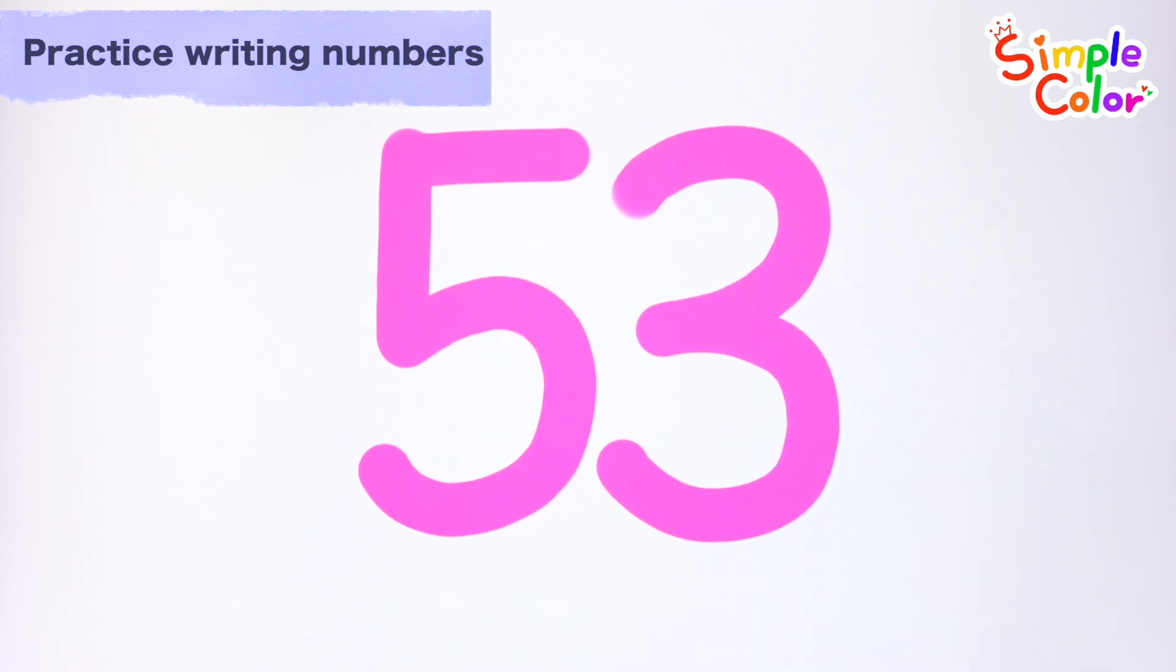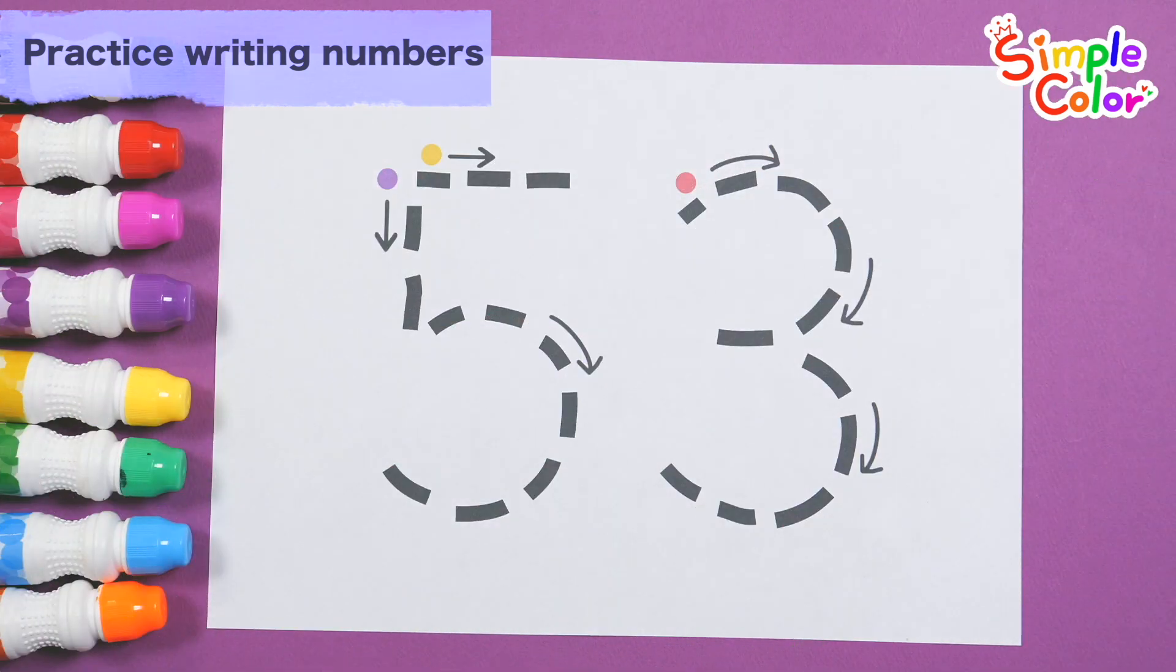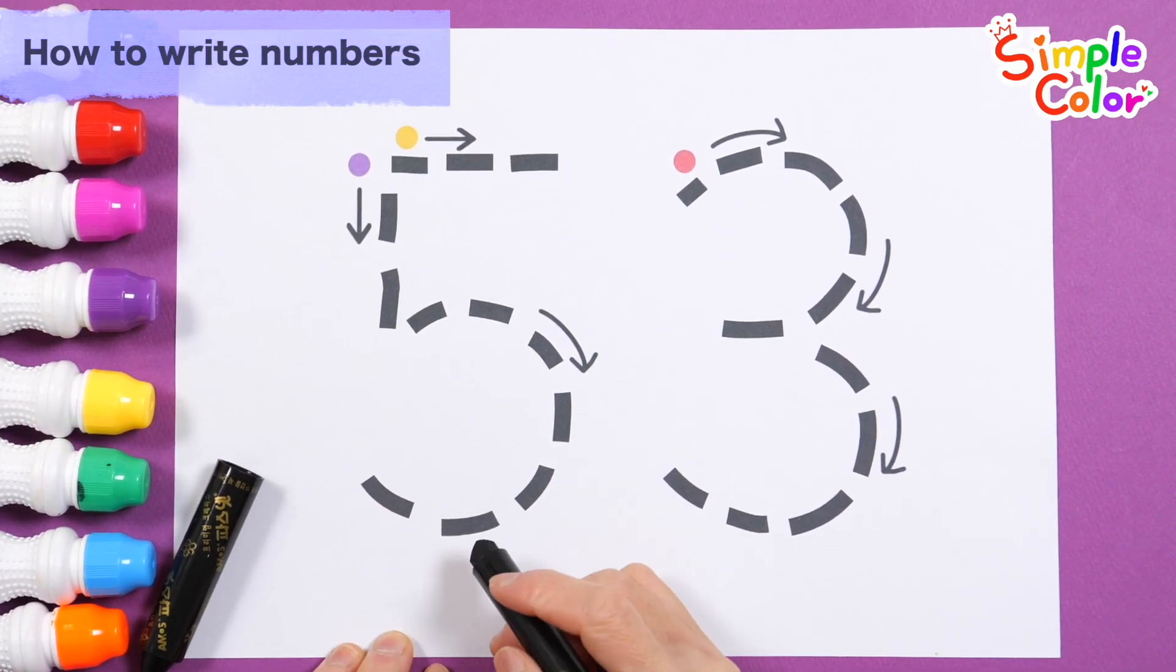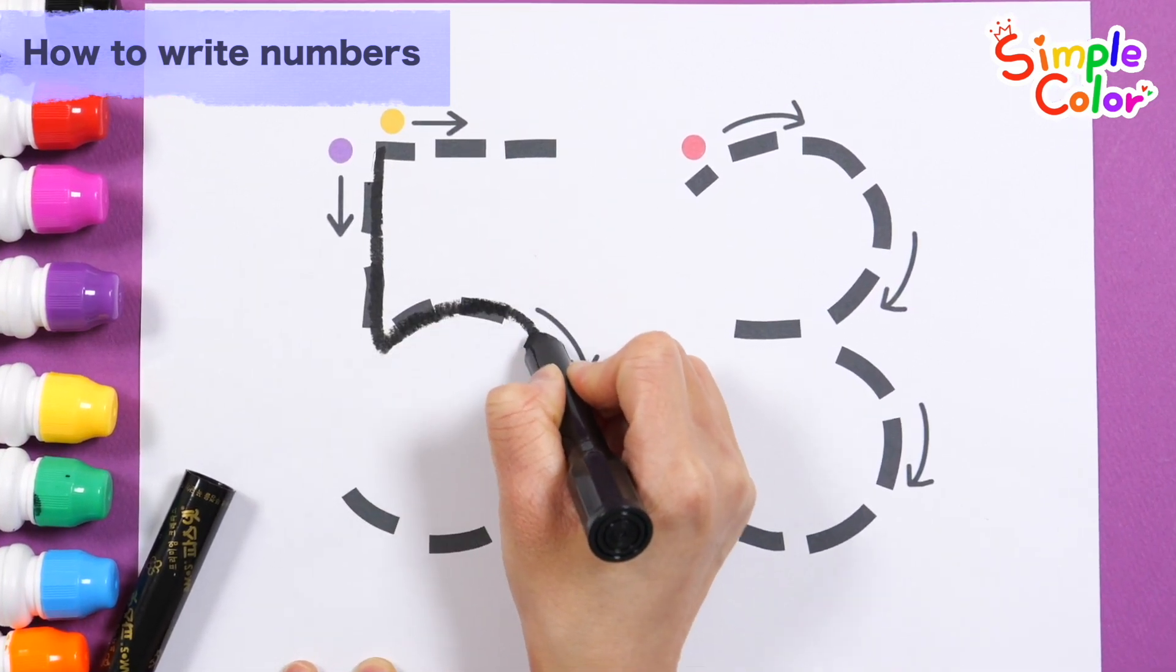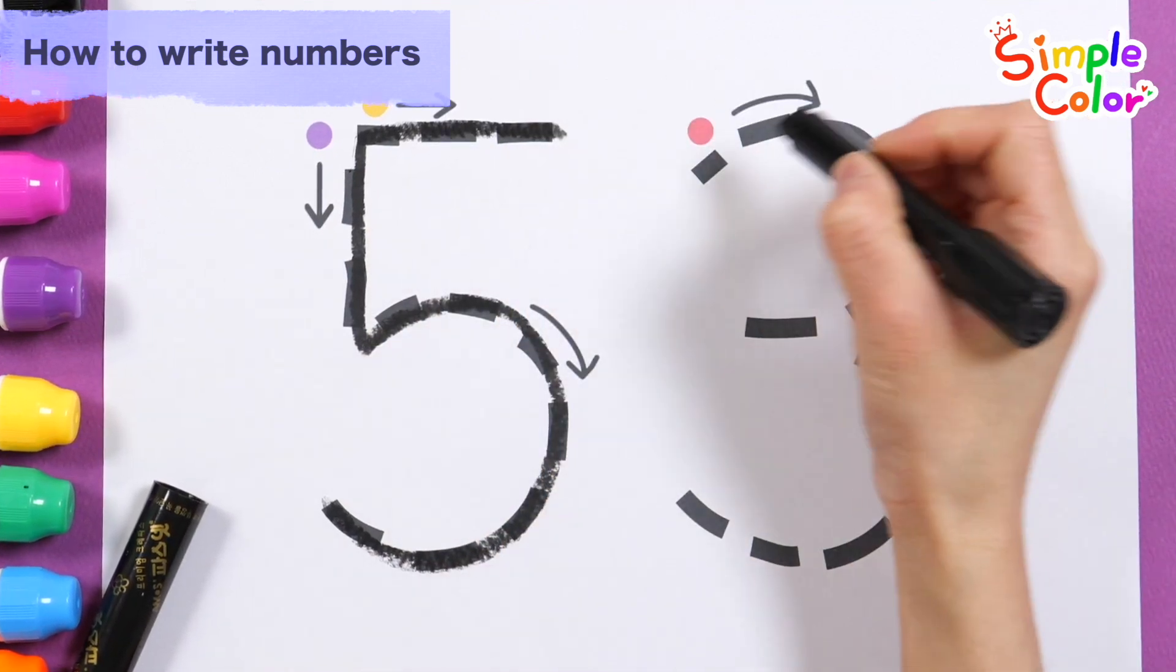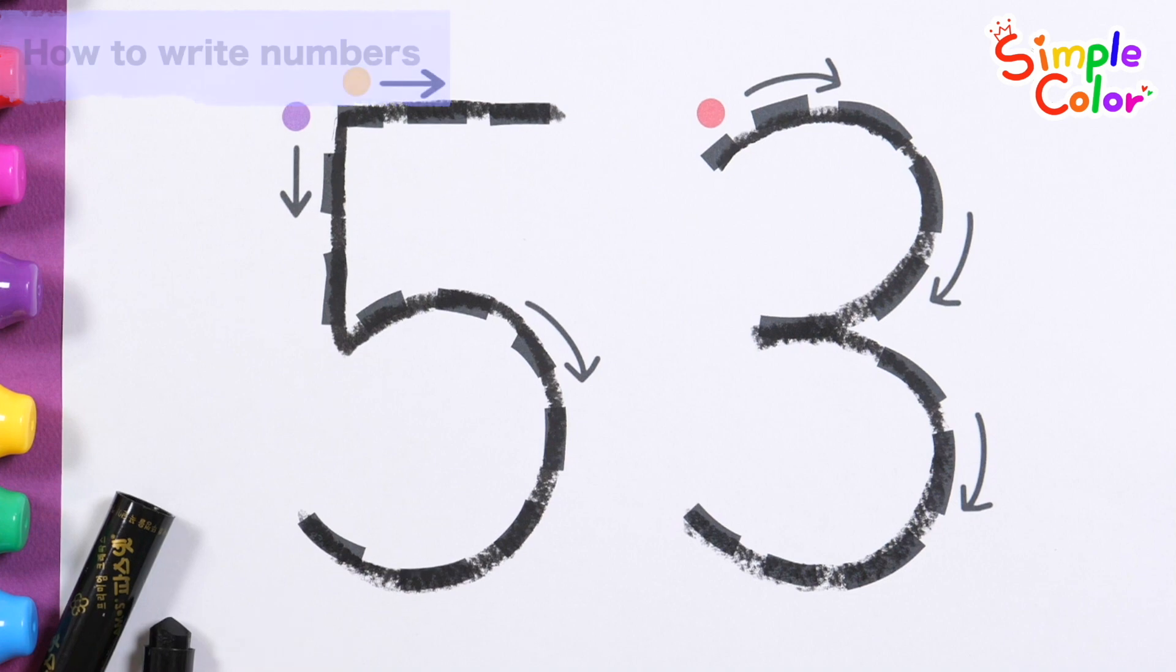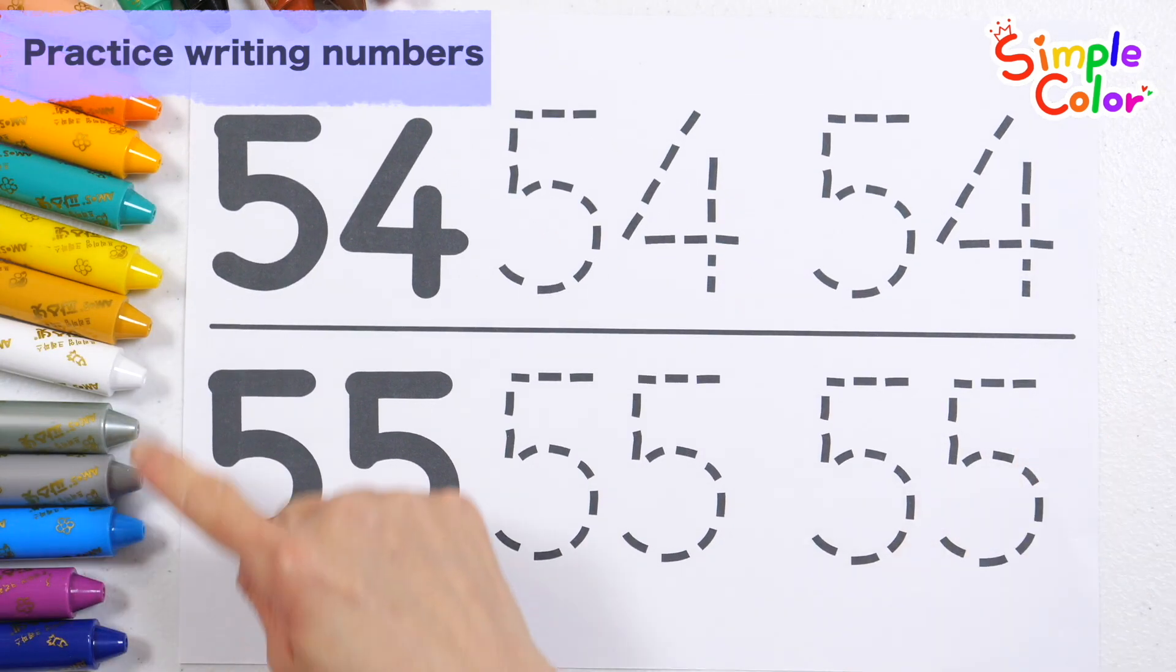53. Shall we learn how to write numbers? Let's learn how to write numbers by following the arrows in the order of purple, yellow, and red. 53. Let's write the numbers repeatedly along the dotted lines.